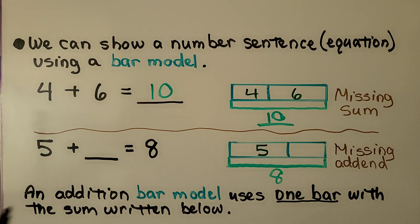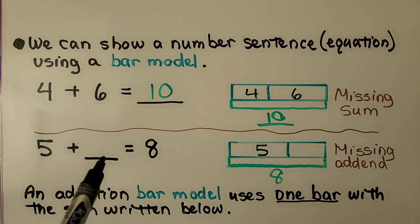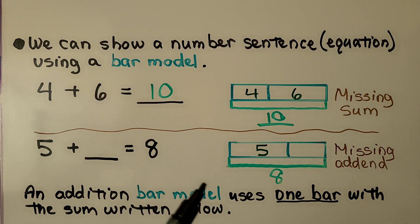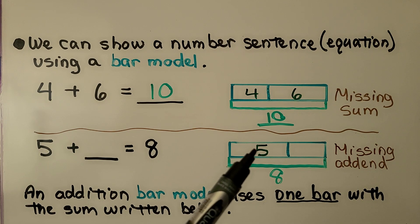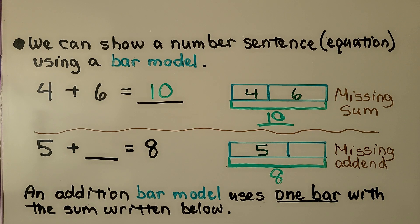Here we have 5 plus some number is equal to 8. We have a missing addend, and the bar model can help us know what the missing number is. We can start with 5 and count on: 5, 6, 7, 8 — we counted on 3 numbers. The missing addend must be 3.